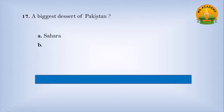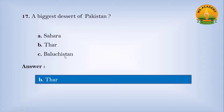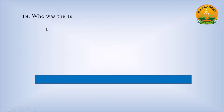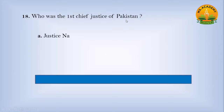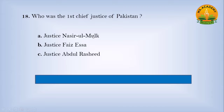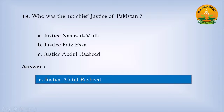Biggest desert of Pakistan: option A Sahara, option B Thar, option C Balochistan — answer is B, Thar. Who was the first Chief Justice of Pakistan? Option A Justice Nasir-ul-Mulk, option B Justice Faiz Isa, option C Justice Abd al-Rasheed — answer is C, Justice Abd al-Rasheed.